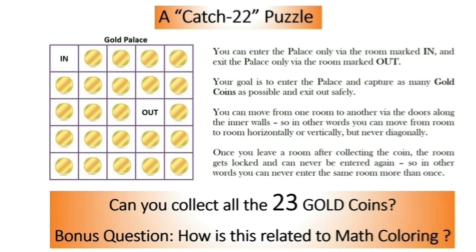This is called a Catch-22 puzzle. Let me read out the puzzle. You can enter the palace that you see here on the left side via the room marked in here, and exit the palace only where the room marked out here. So, you can enter here and you can exit out from here. The goal is to enter the palace and capture as many gold coins as possible and exit out safely. You can move from one room to another via the doors along the inner walls. We can move from here to here to here and so on.